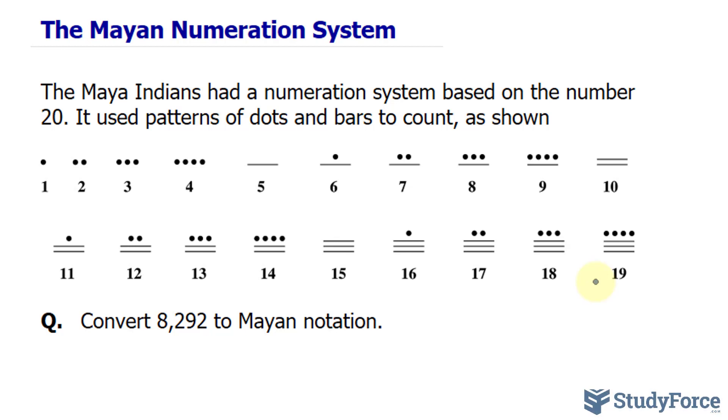Furthermore, numbers in the Mayan system are written vertically, meaning that for every subsequent place value, a new row of symbols are displayed and added to the previous rows. You'll see this in action with our example.